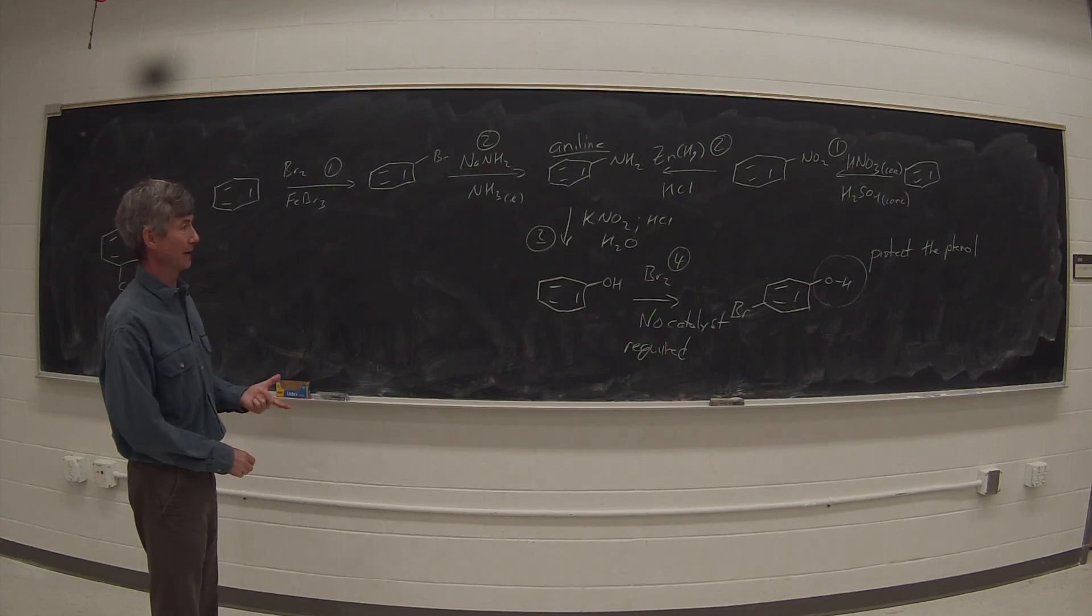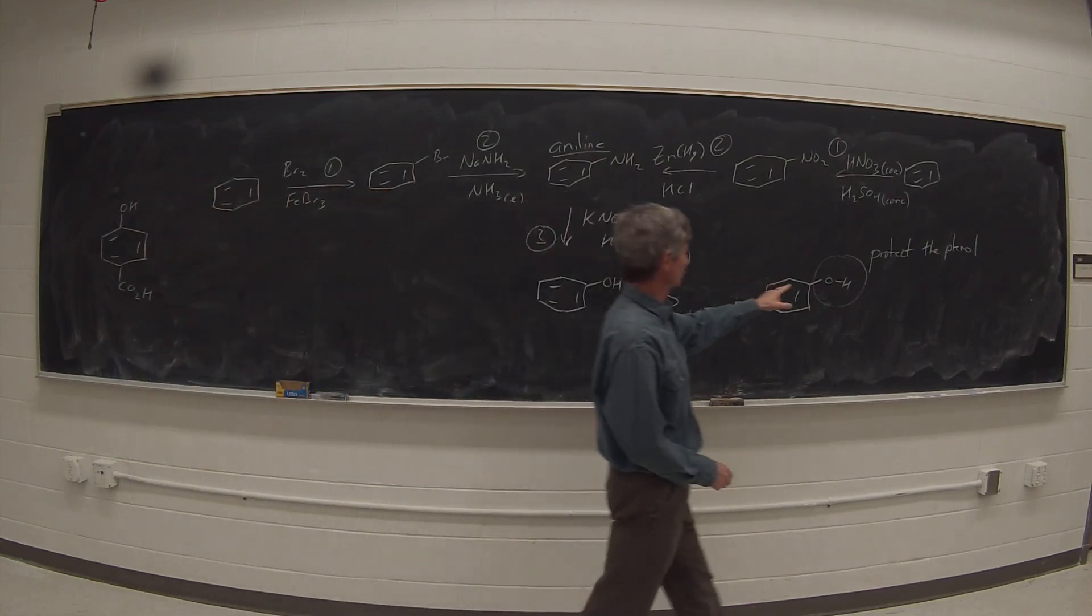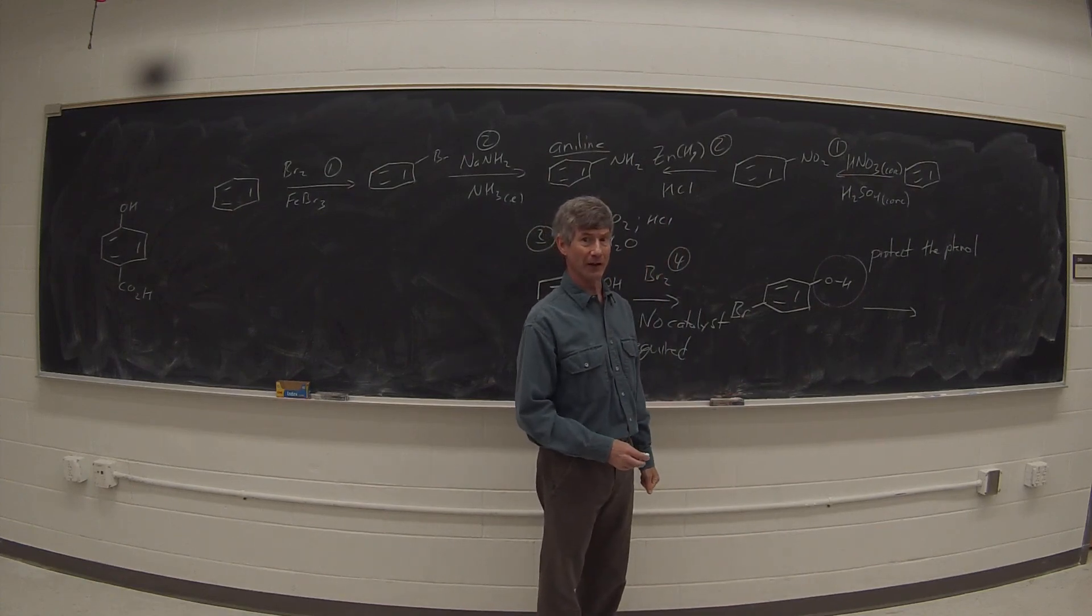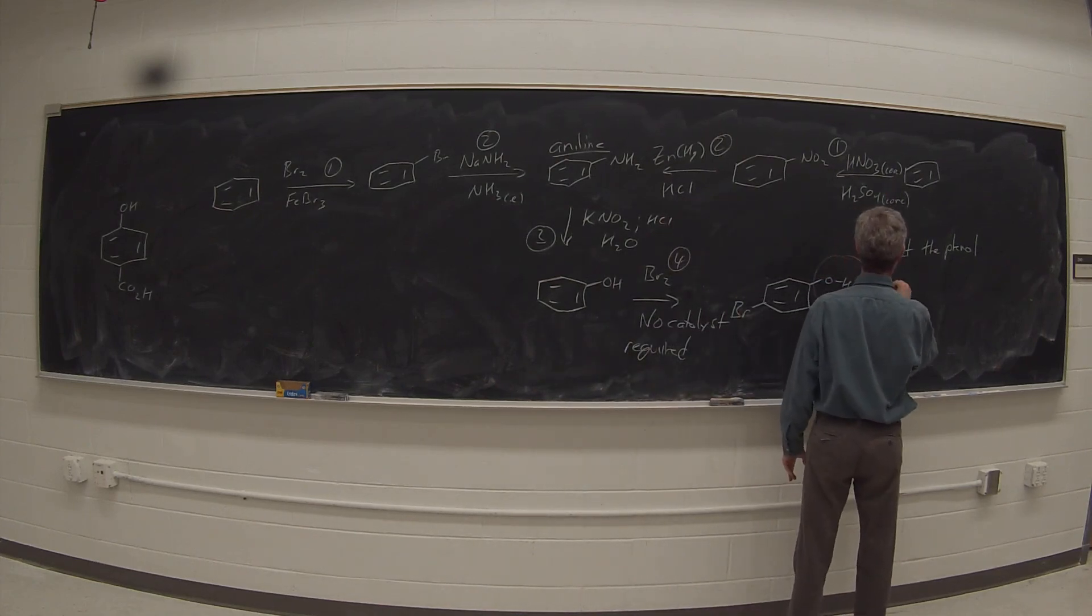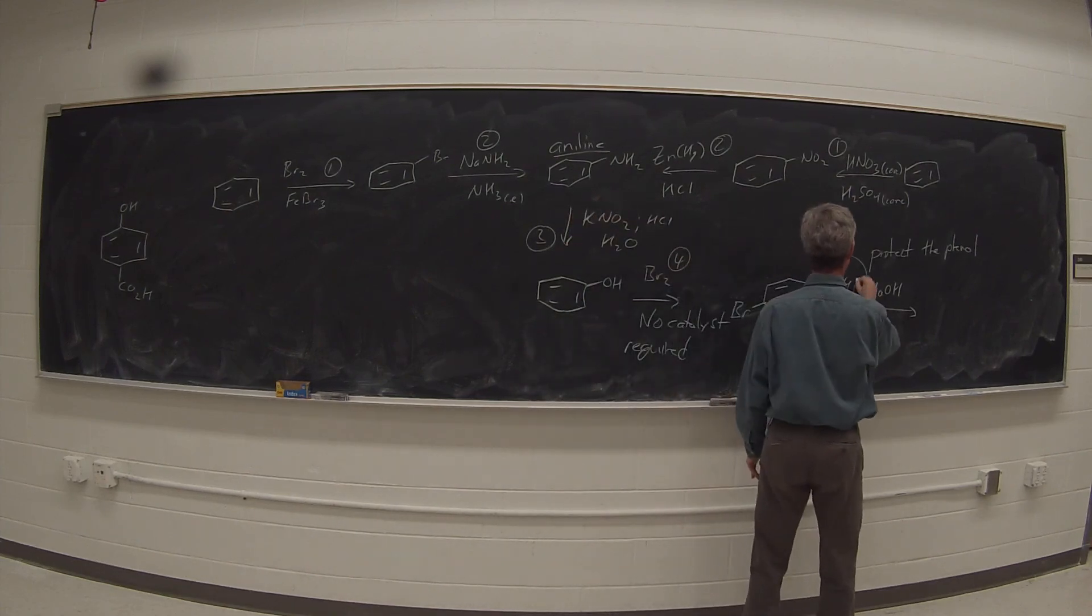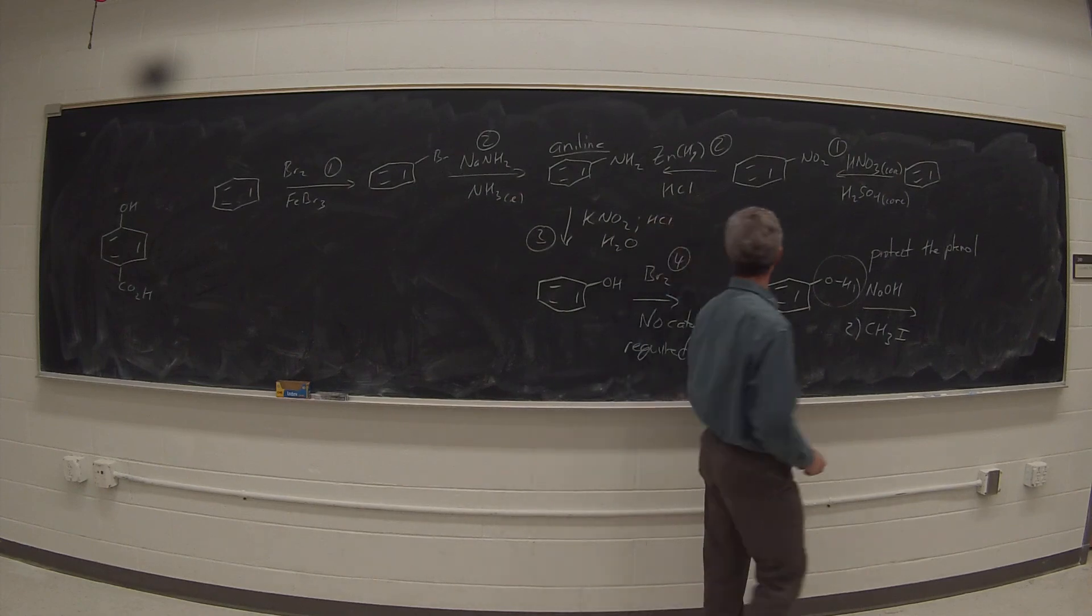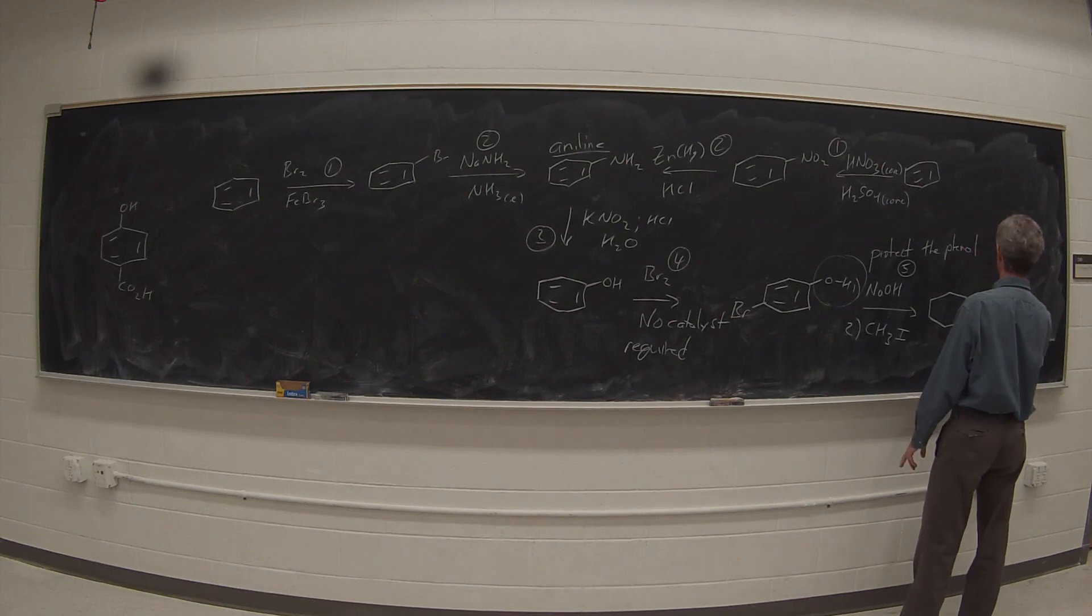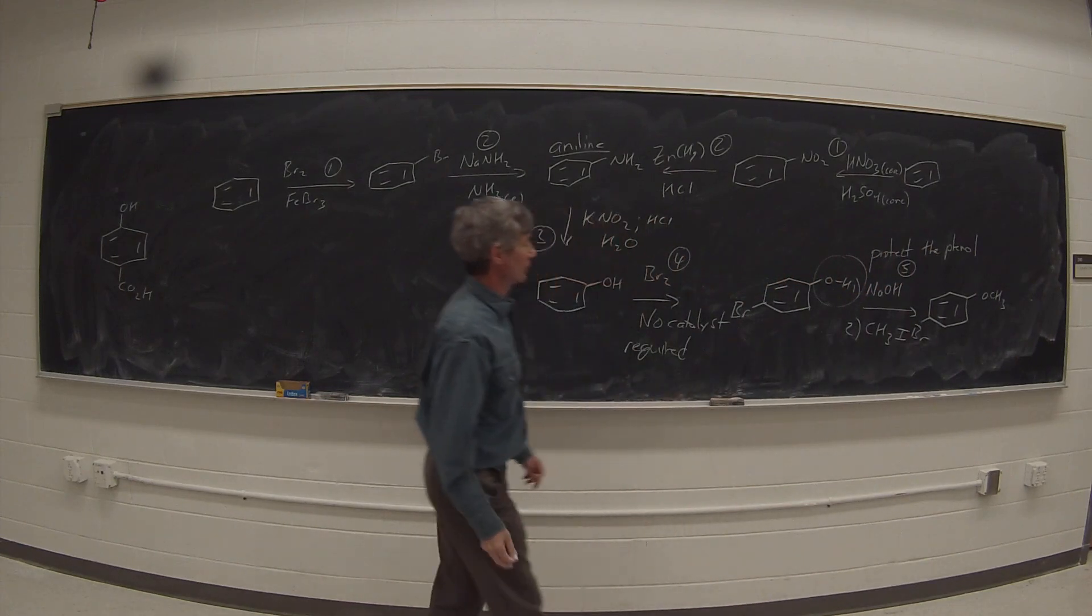Instead of having a hydroxy group on there, an alcohol, in this case a phenol, what we're going to want is an ether. So we will protect this by treating it with a base and then iodomethane to do an SN2 reaction to turn this into the methyl ether. Generally NaOH is a strong enough base because the pKa of the phenol is 10 versus the 15 for water. So in the first step NaOH, and in the second step CH3I. The phenoxide ion will do a nice SN2 reaction and we will have successfully protected that phenol as a methyl ether.